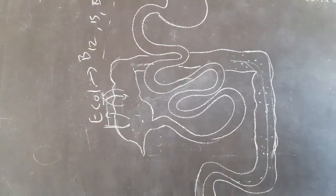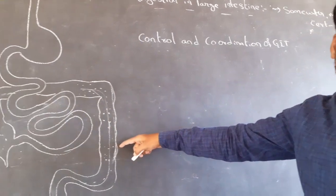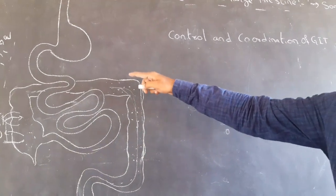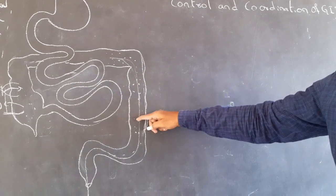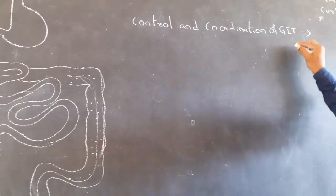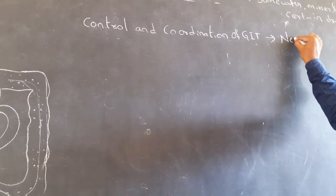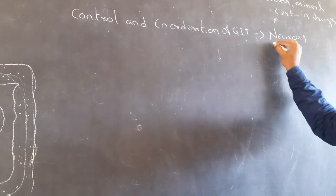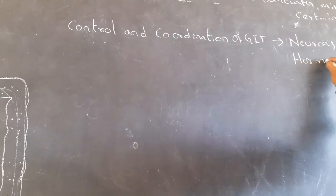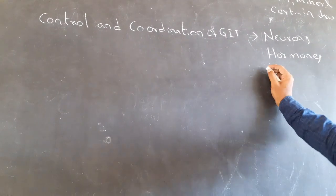Next, control and coordination of the gastrointestinal tract. The activity of the gastrointestinal tract is coordinated by neurons and hormones.